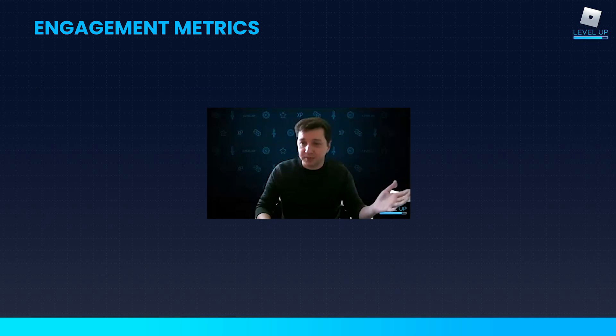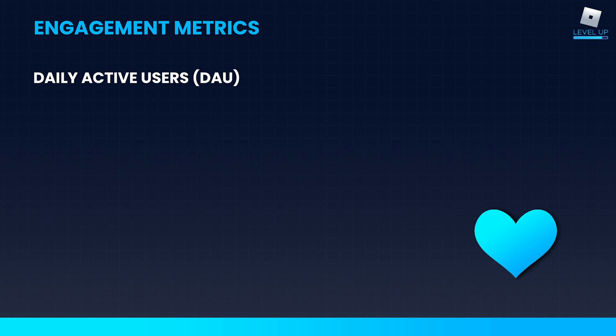To break these down further — first, daily active users. This is a great way to understand the overall health of your game over time. Maybe at the peak of your game you're at 1 million players, and a few months later you're seeing it trending down to 800,000, 500,000, 1,000 — depending on the scope of your game. That's a good indication that something in your game isn't healthy because you're not continuing to retain your players. When you see a downtrend in this number, you can look at other metrics to troubleshoot the issues with your game.